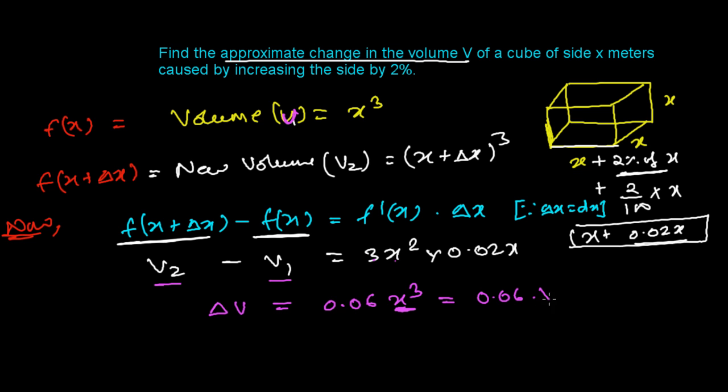So what is this? That's 0.06 and this x³ is actually volume 1, the initial volume. So ΔV is actually 0.06, you can say 6 over 100 of V₁, or simply you can say 6% of